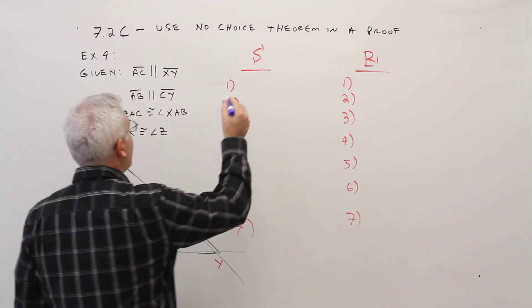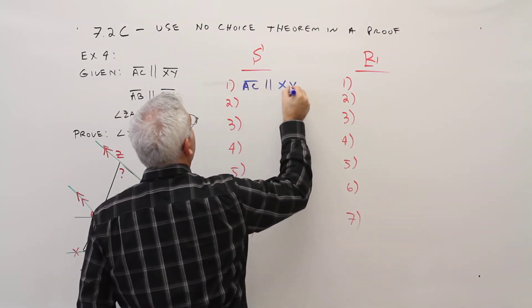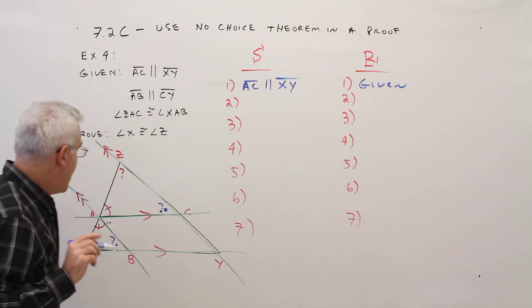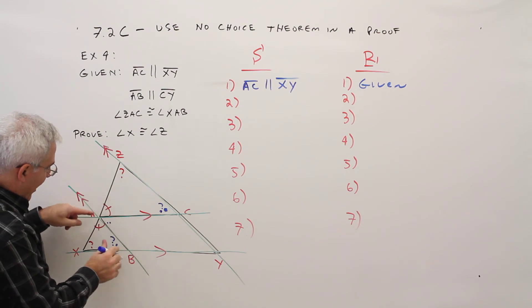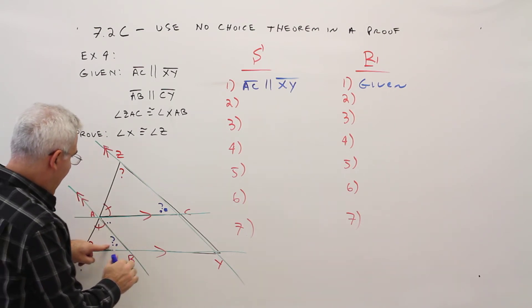So I'll start with AC is parallel to XY. Given. Now based on that, that's how I got these angles here. So I'll call it angle XBA.